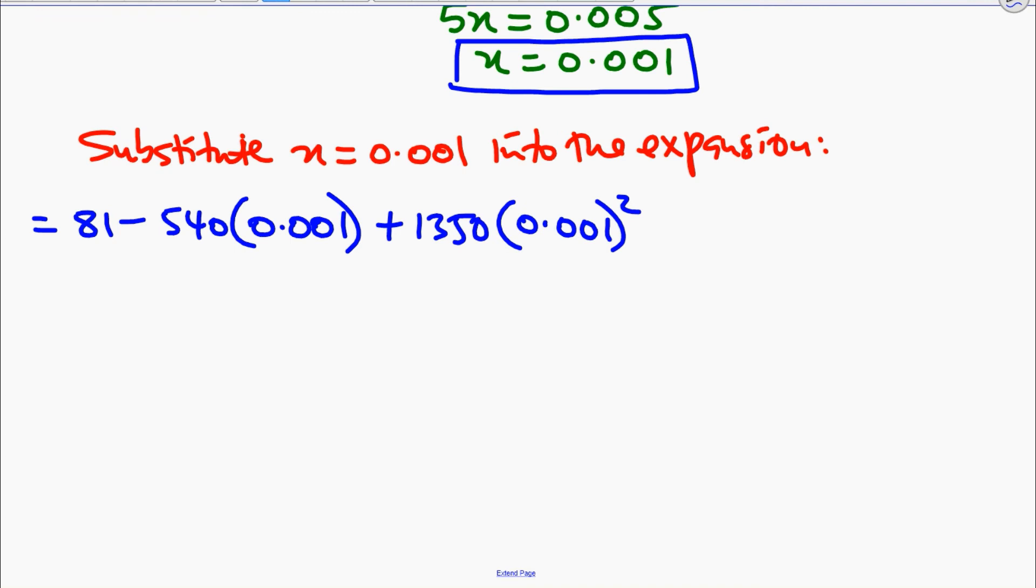And if you plug that in your calculator, this will be equal to 80.46135. But we just need the answer to 6 significant figures. So basically, this answer will be equal to 80.4614 to 6 significant figures.